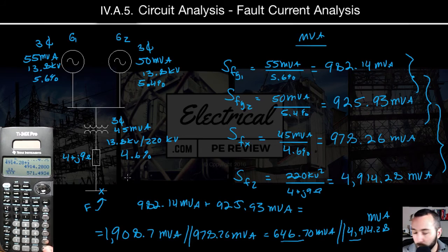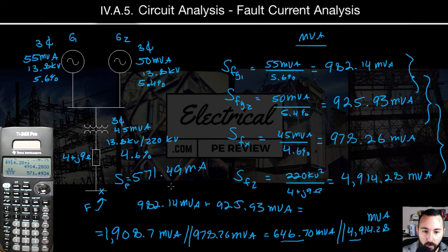So that's going to give us a total of 571.49 MVA. And that is our SF total. So let me clean things up a little bit and then we will continue.